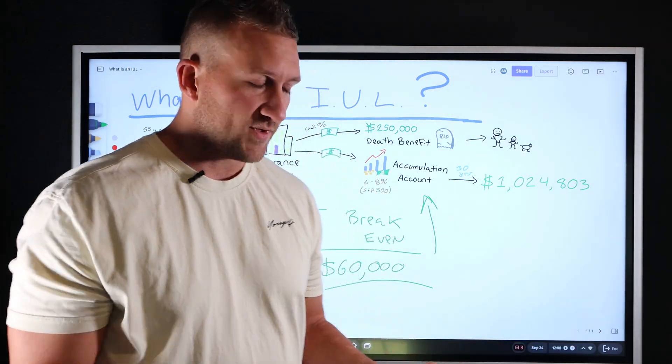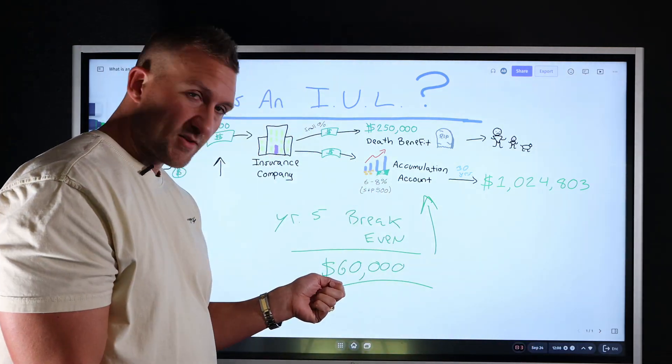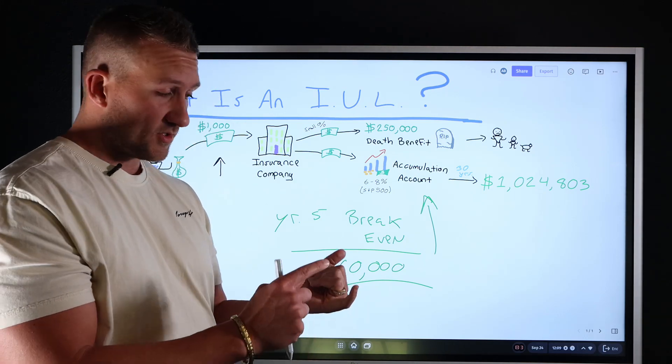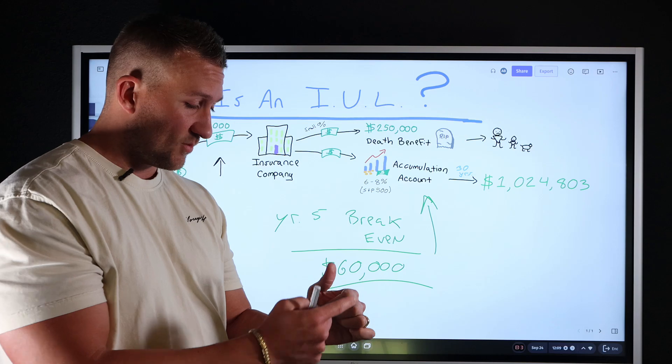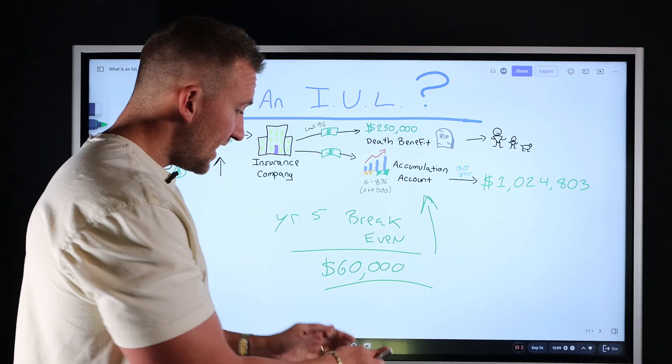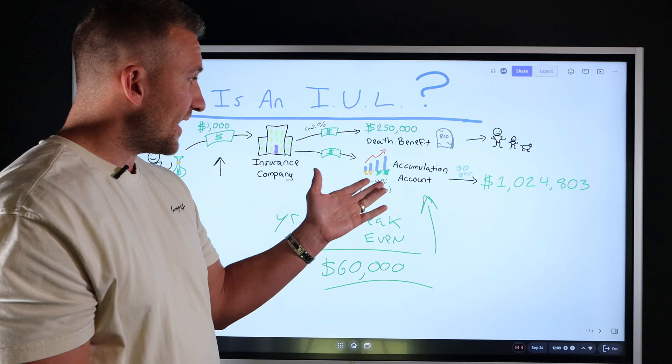But if he needs to grab a couple of thousand bucks, maybe to pay for his kids, first car college, a car breaks down, he wants to go buy an asset. He wants to, he needs to put some working capital in his business. He could grab some funds from here at an interest rate.